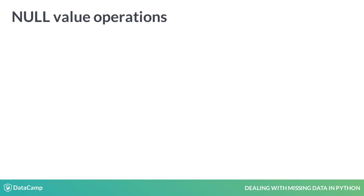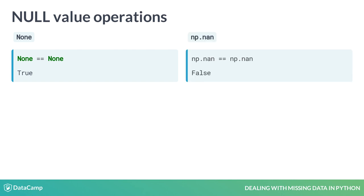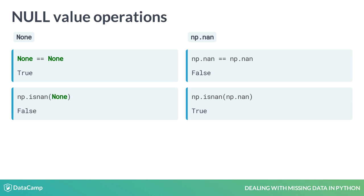Checking for null values is a very important task in this course. Checking None == None returns True, while this is not the case for np.nan, which states that an undefined number cannot be equal and thereby returns False. Instead, the correct way to check for NaN is by using the function np.isnan(). You must note that finding null values this way does not work for NoneType.